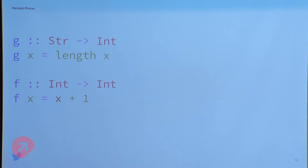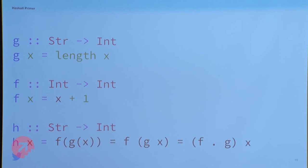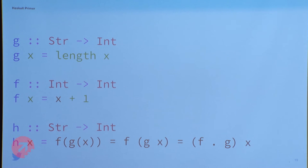Let's start with a more concrete example. Assume I have two functions f and g. G goes from string to integer — let's say it computes the length of the string. Then f is defined as before: a function that adds one to your integer. Can I compose these two functions? Yes — because the return type of g is exactly the same as the input type of f. So I can create a new function h that goes from string to int, defined as f after g: I apply g, whatever the result is, I apply f to that. We can compose them because the return type of one coincides with the input type of the other.